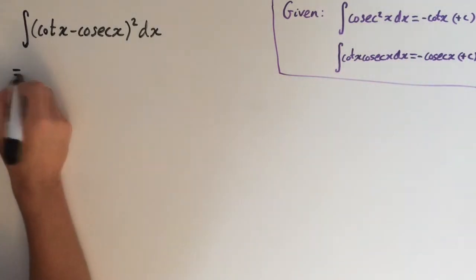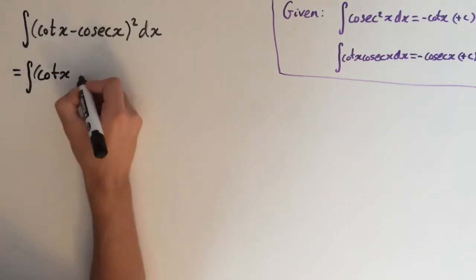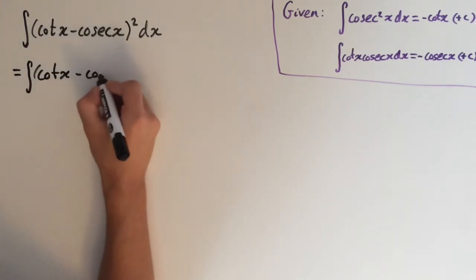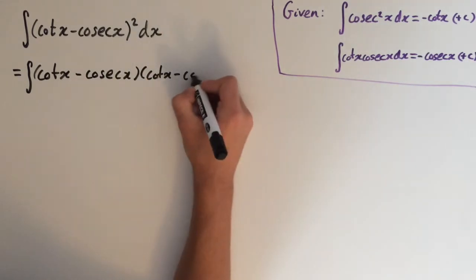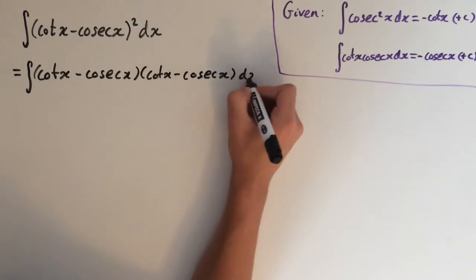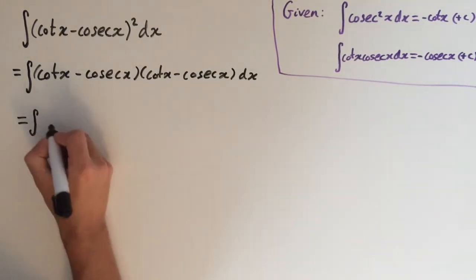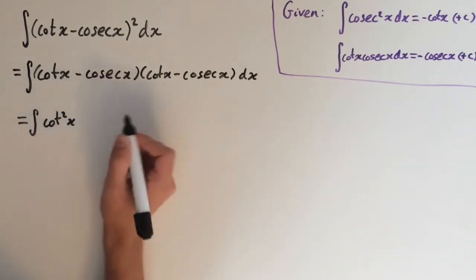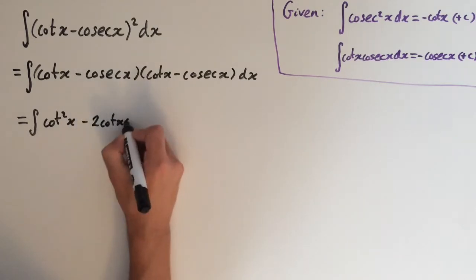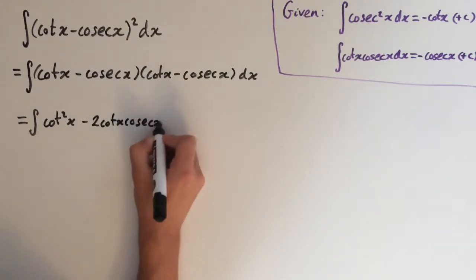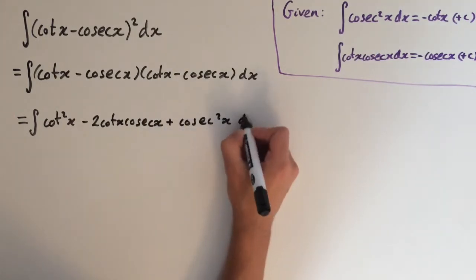I'm going to write these two brackets out so you can see how it expands. So this is (cot x minus cos x) times (cot x minus cos x). Now let's expand this — this is going to look like cot squared of x minus two lots of cot x cos x plus cos squared of x, dx.